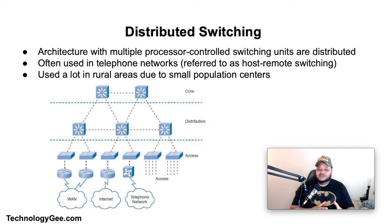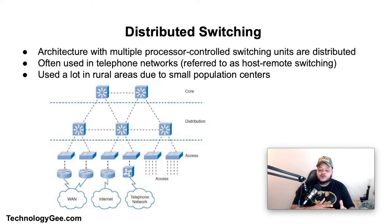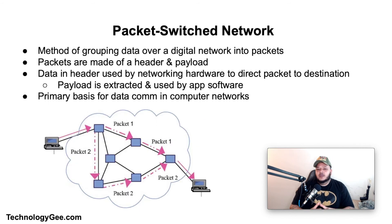Distributed switching is an architecture in which multiple processor-controlled switching units are distributed, often in a hierarchy with a centralized host switch and remote switches located close to concentrations of users. It is often used in telephone networks — referred to as host-remote switching. In rural areas with small population centers and expensive transmission distances, distributed switching allows most local calls to be switched at the remote location without being transported to the host switch. The host switch provides connectivity between remote switches and the larger network, and may also handle rare complex call types like conference calling.